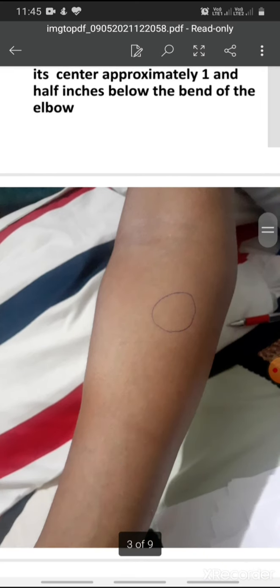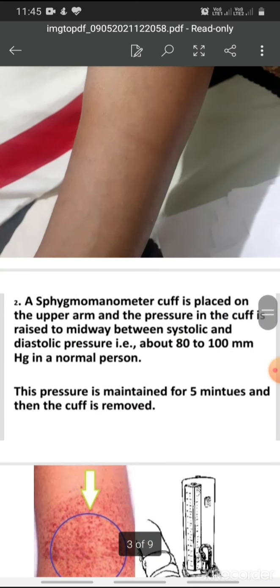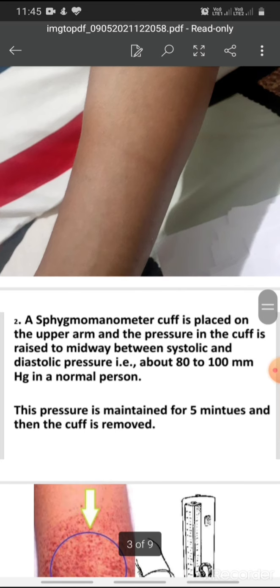You can see a sphygmomanometer cuff is placed on the upper arm and the pressure in the cuff is raised to midway between systolic and diastolic pressure, that is about 80 to 100 mm of mercury in a normal person.